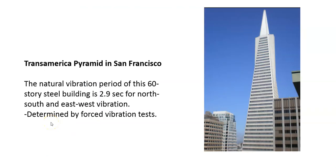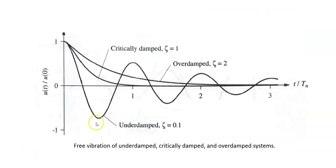The Transamerica Pyramid in San Francisco is another example of an under damped system. The natural vibration period of this 60-story steel building is 2.9 seconds for north-south and east-west vibration, meaning it takes 2.9 seconds for the building to return to its equilibrium position when it starts vibrating.